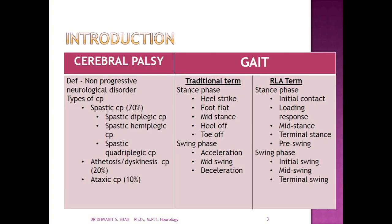Cerebral palsy is a non-progressive neurological disorder. There are different types of cerebral palsy children. Among them, 70% of cerebral palsy children are spastic, 20% are athetosis or dyskinetic CP, and 10% are ataxic CP. Within the 70% spastic CP, we have spastic diplegic CP, spastic hemiplegic CP, and spastic quadriplegic CP. Spastic diplegic and spastic hemiplegic are the most common ones.